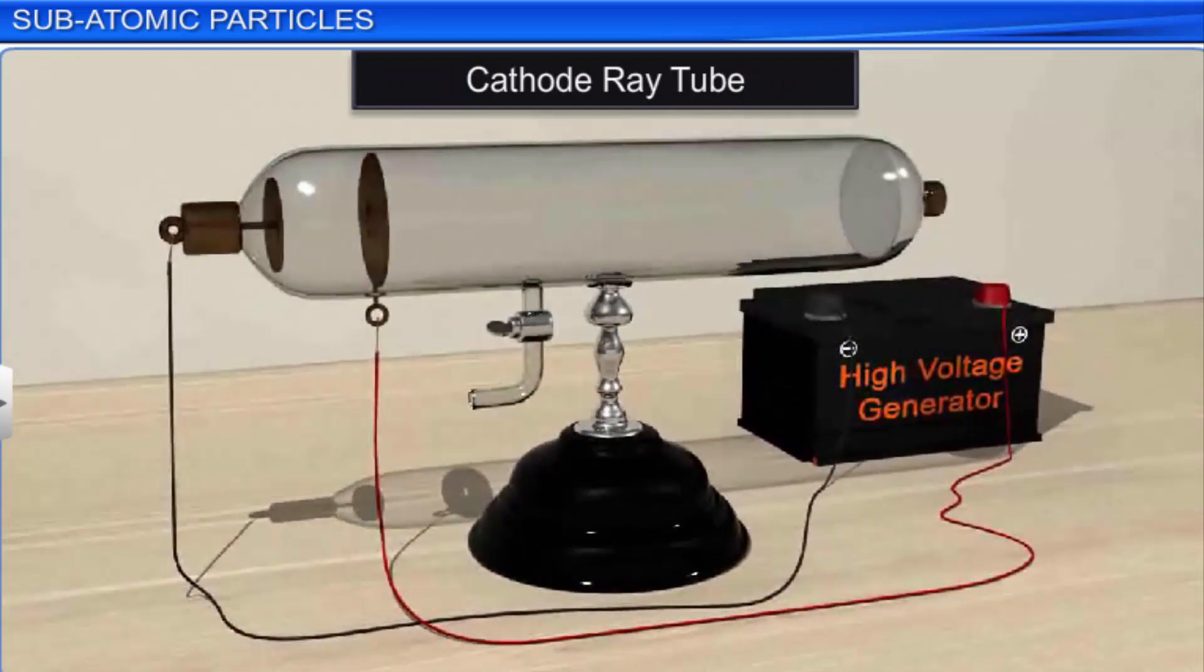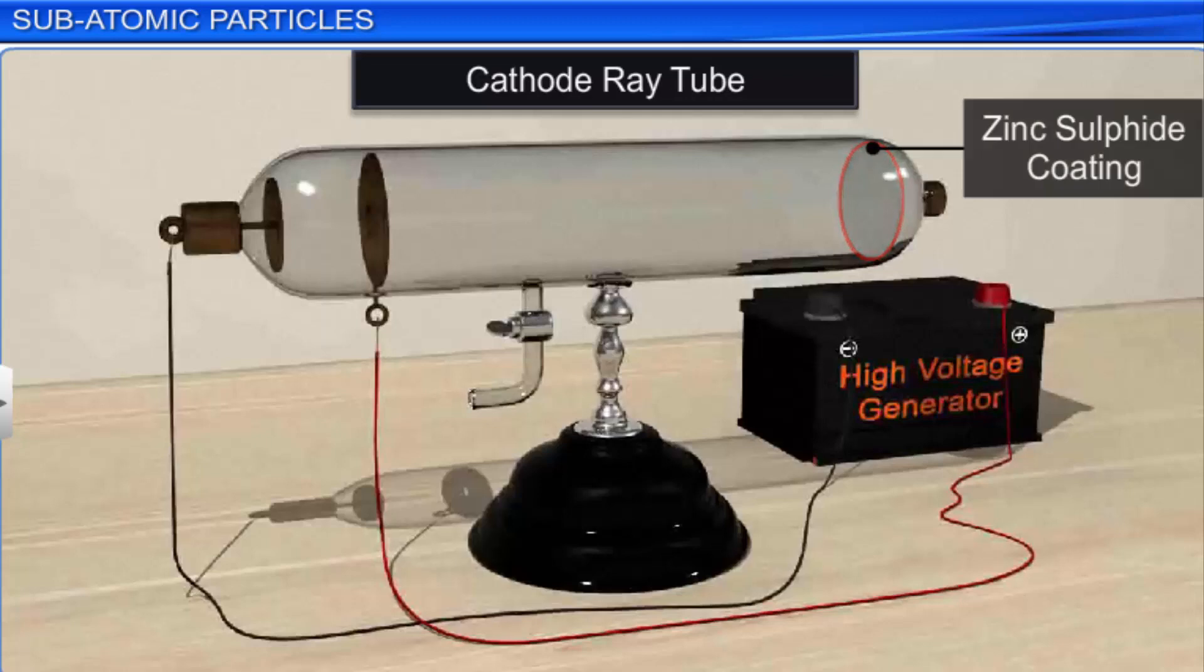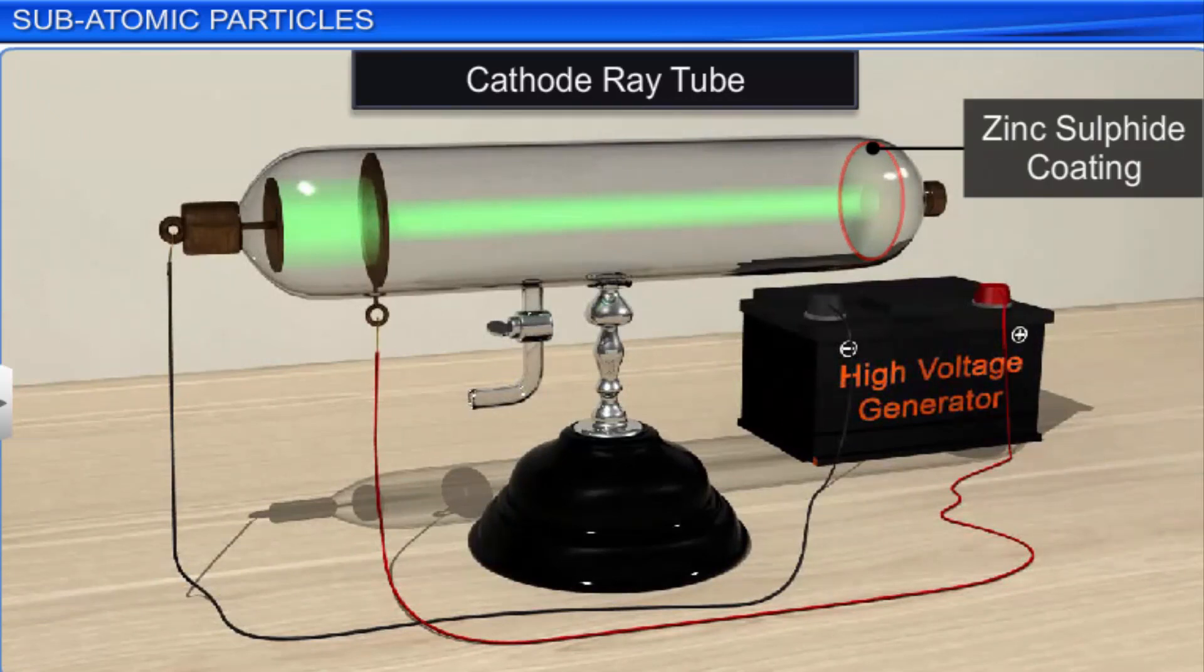To further study the behavior of this current, he punctured the anode inside the cathode ray tube and coated the glass tube behind the anode with fluorescent material such as zinc sulfide. When he repeated the experiment, he noticed a bright spot on the coating behind the anode, which confirmed that the current consisted of invisible rays of particles, some of which could pass through the perforated anode. These rays were emitted from the cathode and moved towards the anode. These rays were named cathode rays.